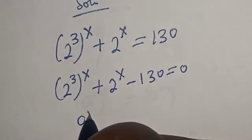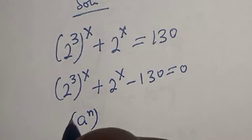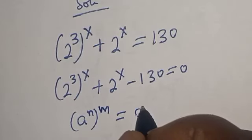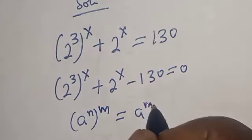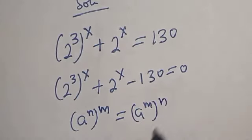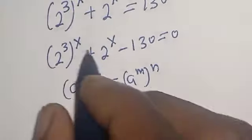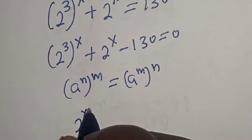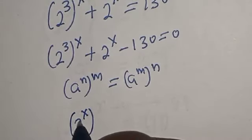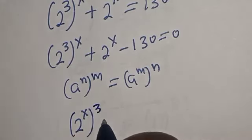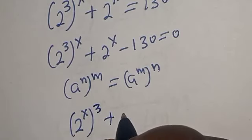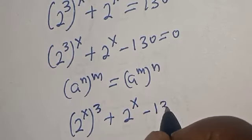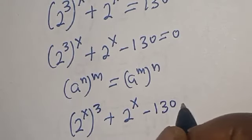Remember this exponential rule: a raised to the power n, raised to the power m, is equal to a raised to the power m raised to the power n. Applying this, we have 2 raised to the power s, raised to the power 3, plus 2 raised to the power s minus 130 is equal to 0.